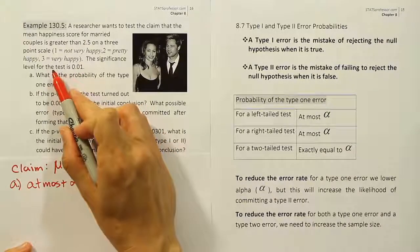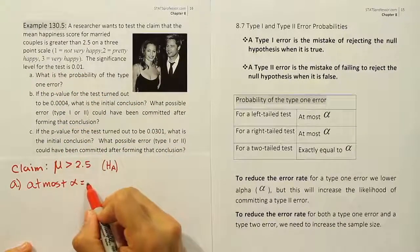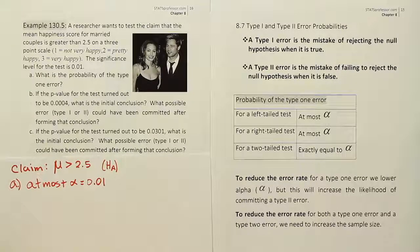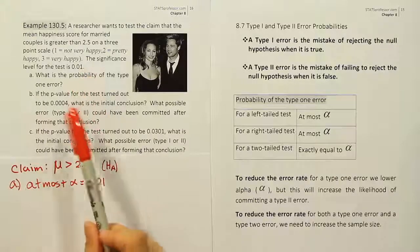And of course, alpha in this problem is given to us as 0.01. That is the probability of a type 1 error for this test. All right, let's look at part B, then.